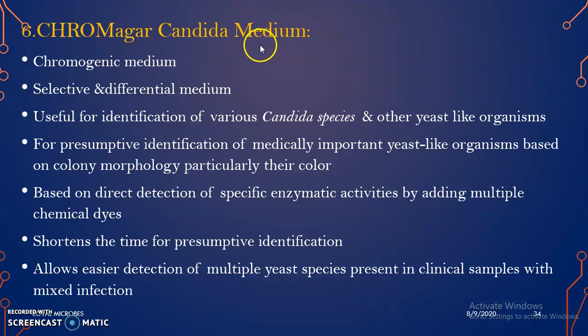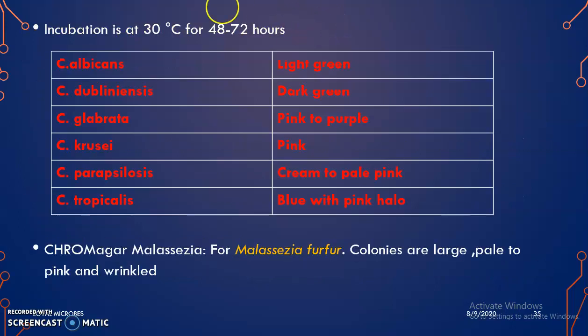Next is CHROMagar Candida medium, a chromogenic (color-producing) selective and differential medium used for identification of various Candida species and other yeast-like organisms. It is used for presumptive identification based on colony morphology, particularly the color produced, through direct detection of specific enzymatic activities using multiple chemical dyes. It shortens the time for presumptive identification and allows easier detection of multiple yeast species in clinical samples with mixed infections. Incubation is 48 to 72 hours at 30 degrees Celsius, with different Candida species producing different colors.